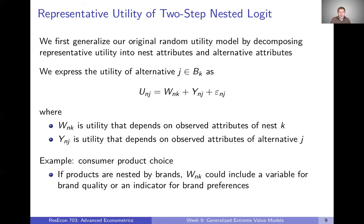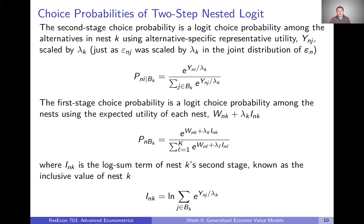An example is consumer product choice. If we're thinking about nesting products by brands — say phones: iPhones, Samsung phones, Google phones, LG phones — we might nest those by brand. Then W, the representative utility at the nest level, could include variables for brand quality or an indicator for brand preference, something that varies at the brand level rather than at the specific model level.